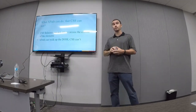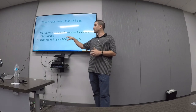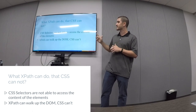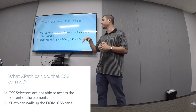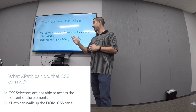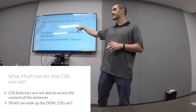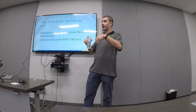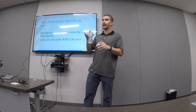Is XPath really the most powerful locator strategy? The answer is yes. There are two things you can do with XPath that you cannot do with CSS. First, CSS cannot access element content — you can't use element text to find it, but with XPath you can. Second, with XPath you can walk up the DOM: find a child element and go to its parent. You cannot do that with CSS.